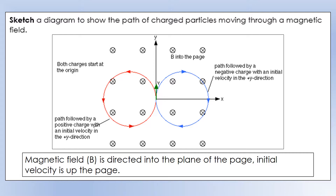The particle travels at constant speed but its direction keeps changing, making it go in a circle — the red path shown. A negative charge experiences a force in the opposite direction, so it follows the blue path. We can change the radius of these circles: making the particle move faster gives a bigger radius, while a stronger magnetic field gives a smaller radius — we'll explore that more when we get to circular motion.